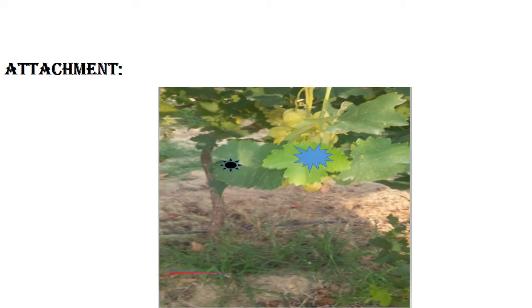Nematodes usually move to the underground parts of the plant and attach there. Viruses don't have hyphae or polysaccharides — they only have a nucleic acid and protein coat. The virus protein coat helps them attach not to the plant but to the insect vector, and later this insect vector directly drops the virus inside the host cell. So viruses don't need to attach themselves to the plant. At this point, the process of inoculation is almost completed.